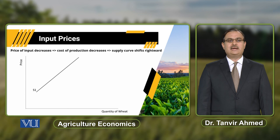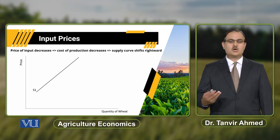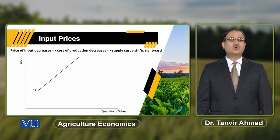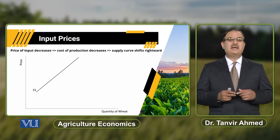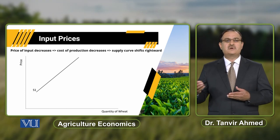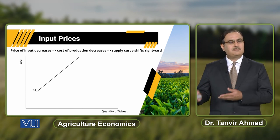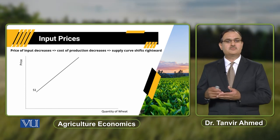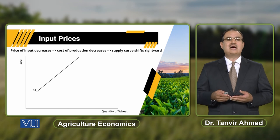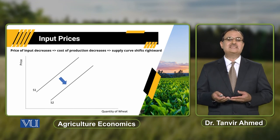Agar main isi cheez ko elaborate karun with reference to decrease in input prices, to because of that decrease in input prices, cost of production of firms will decrease. Hum example le rahe hain wheat supply and price ki. Agar meri input prices kam hongi, it results in decrease in cost of production of wheat for farmer. Jab wo farmer ki cost of production decrease ho jaegi, then it results in a rightward shift in the supply curve, and this movement from S1 to S2 indicates increase in supply of wheat because of decrease in price of input.